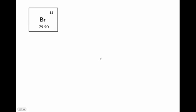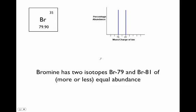If we look at bromine, for example, its atomic mass is almost 80, but there are no isotopes of bromine with a mass number of 80. The mass spectrum shows two isotopes of about equal abundance, one with mass 79 and one with mass 81. This makes sense that the atomic mass of bromine is about 80.